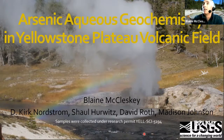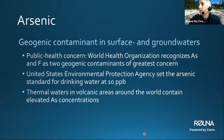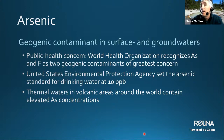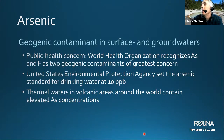While this presentation focuses on arsenic in thermal and river waters in Yellowstone, it's really a worldwide issue. Arsenic is a geogenic contaminant in surface and groundwaters, and the World Health Organization recognizes it along with fluoride as the two geogenic contaminants of greatest concern. The US EPA set the standard for drinking water at 10 micrograms per liter. Thermal waters in volcanic areas around the world contain elevated arsenic concentrations, often three to four orders of magnitude greater than the EPA drinking water standard, and these thermal waters are known to impact downstream water resources.